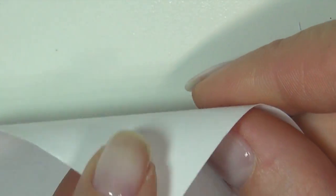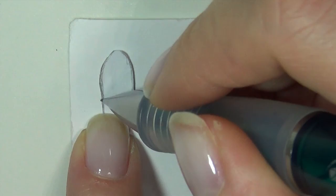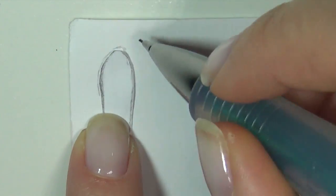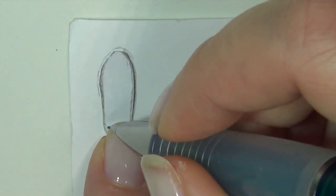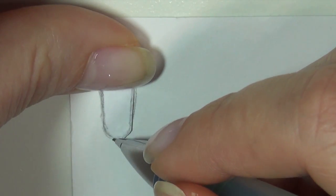Now get out some thicker paper. I'm using sketching paper and trace two of our base and cut them out. Both of these are going to be for the same shoe, so be sure to make two others for the other foot.